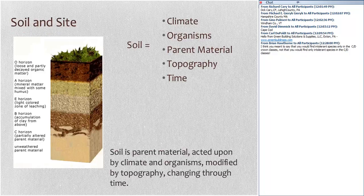Soil is that combination of climate, organisms, parent material, topography, and time — a definition that goes back many decades to Hans Jenny. Another way to describe soil: it is parent material acted upon by climate and organisms, modified by topography and changing through time. The process of soil development creates layers in the soil — the O horizon, the A horizon — each with different attributes.